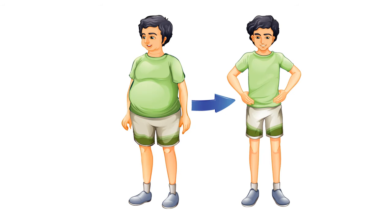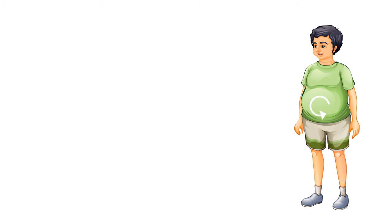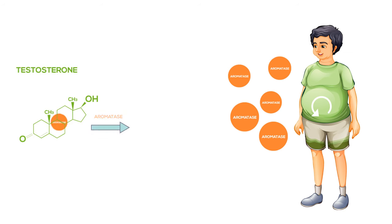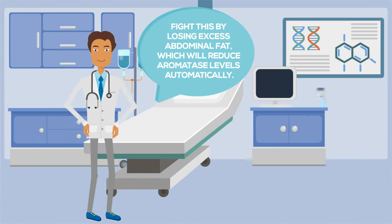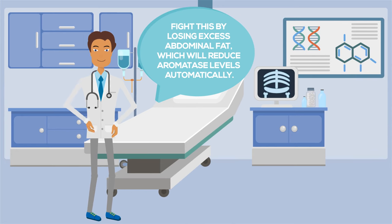Your first move should be to reduce gut fat, because the spare tire around your midsection causes your body to produce too much of a feminizing enzyme called aromatase. And why is this a problem? Because aromatase converts your testosterone into estrogen, which atrophies your testicles and pushes testosterone levels down even further. Fight this by losing excess abdominal fat, which will reduce aromatase levels automatically.